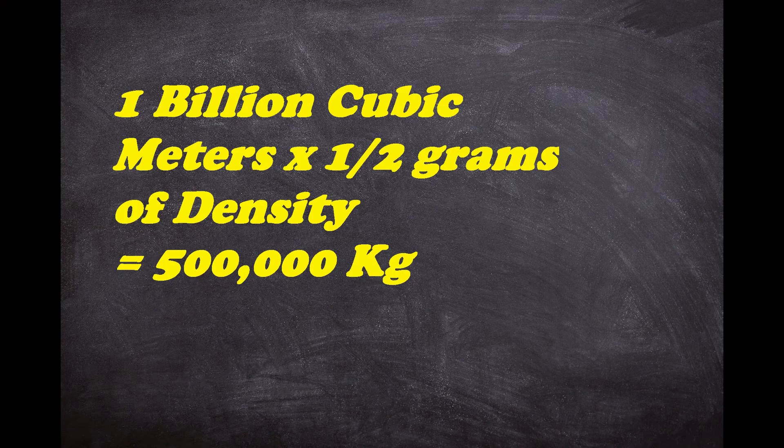If you do the math, you get 1 billion cubic meters. And if you multiply that by the density, you get around 500,000 kg — that's like 100 elephants.